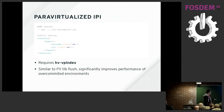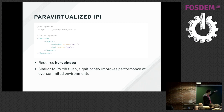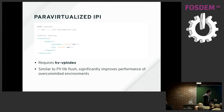Paravirtualized IPIs have a similar concept, but we can't just drop the IPI because inter-processor interrupts have to happen. The benefit is that you can send IPIs to more than 64 CPUs at a time, whereas in hardware you'd have to do a VM exit for every 64 CPUs you want to send to, making it cheaper overall.